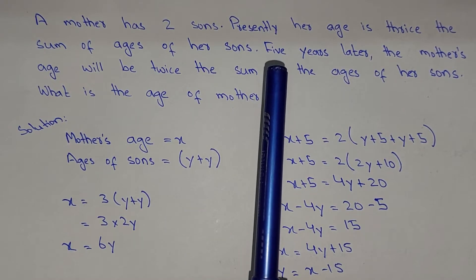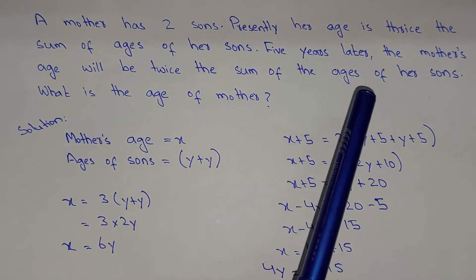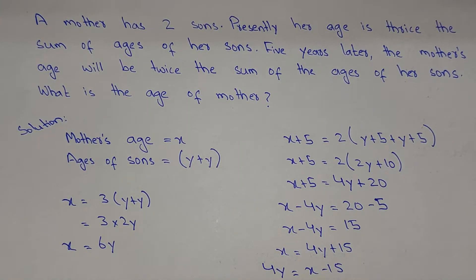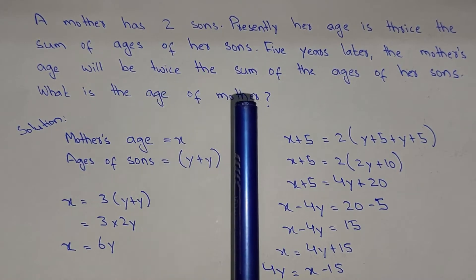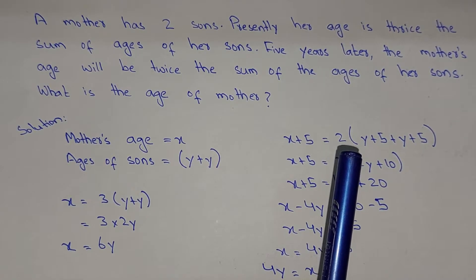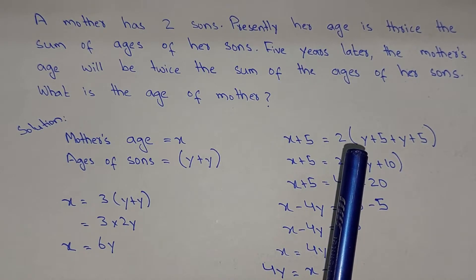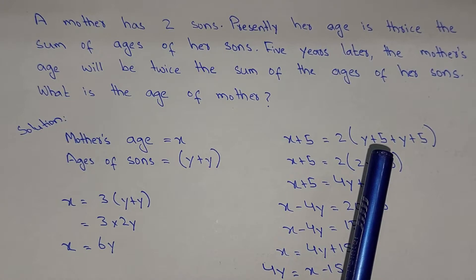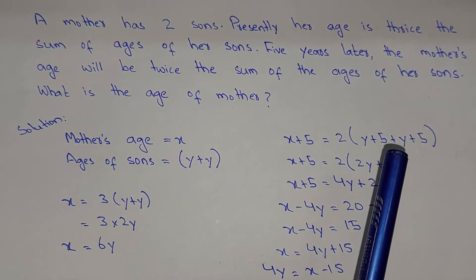Now it is also saying five years later, the mother's age will be twice the sum of the ages of her sons. When talking about the future we do addition. So five years later, the mother's age will be x plus 5, equal to twice the sum of the sons' ages. Each son's age after 5 years will be y plus 5, so together: y plus 5 plus y plus 5.